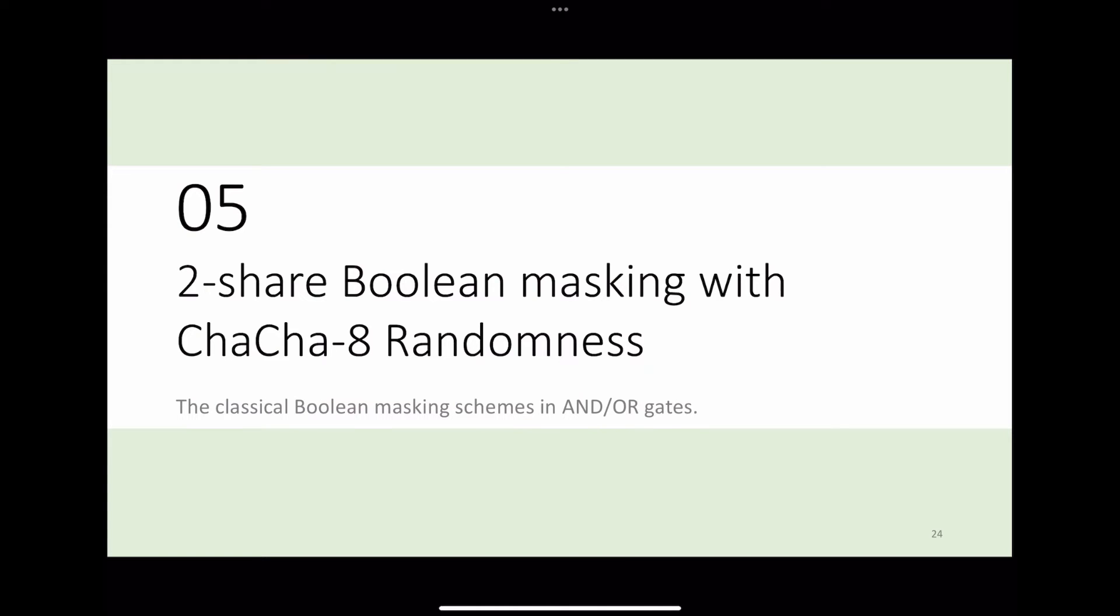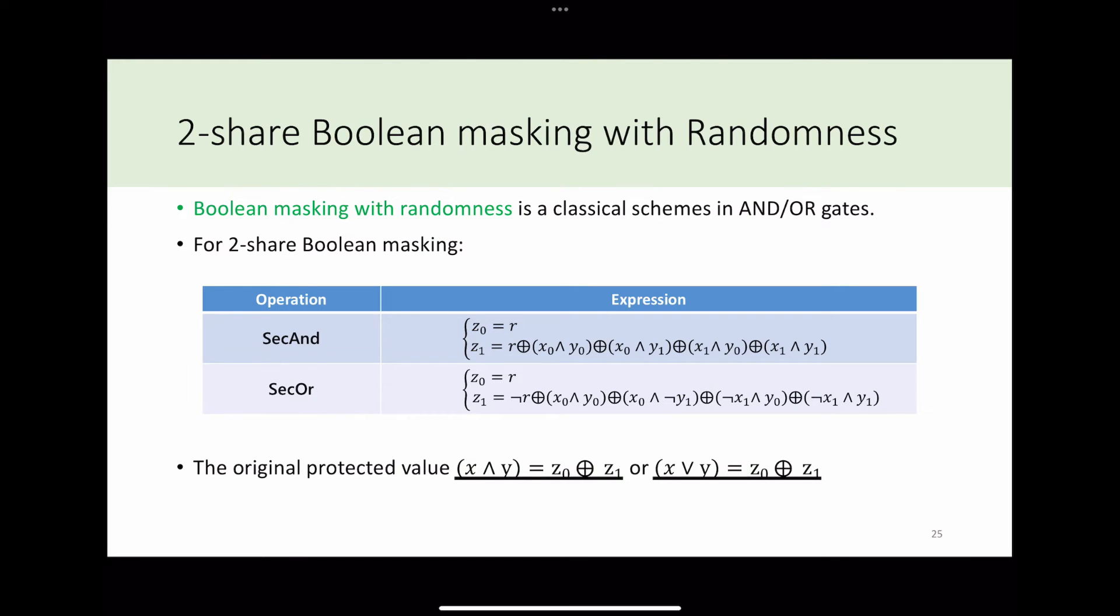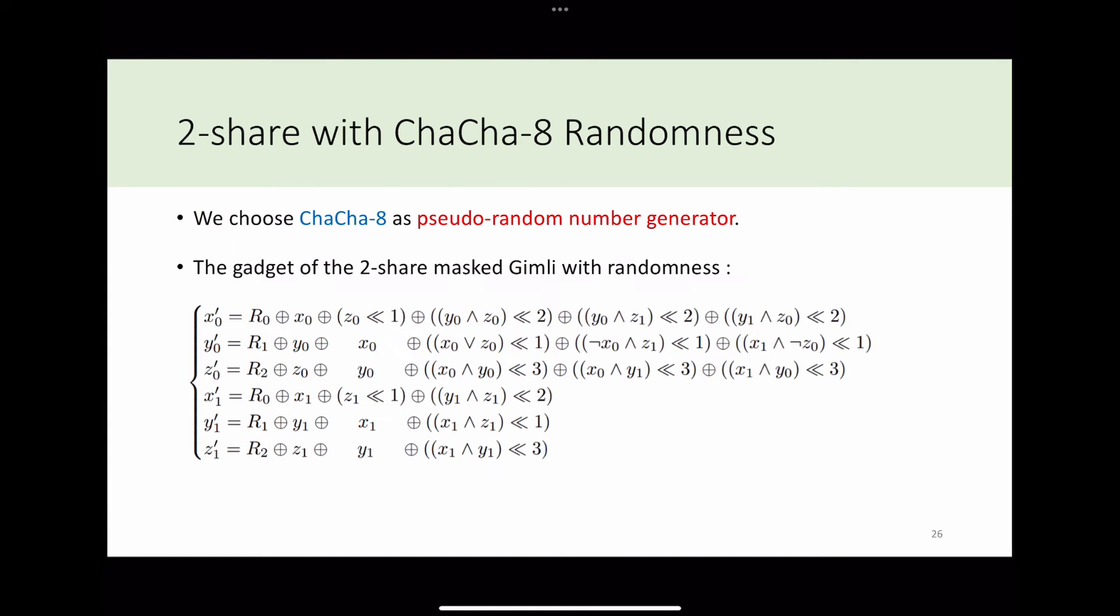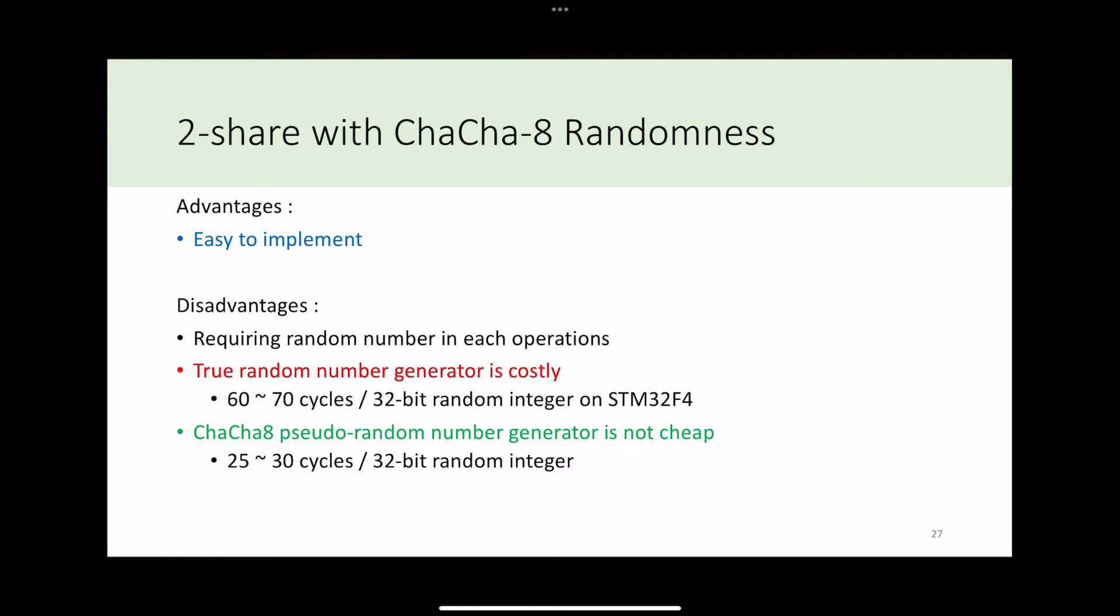Now, we implement a masked Gimli with a classical Boolean masking scheme. Boolean masking with randomness is a classical scheme in AND/OR operations. For two-share Boolean masking, put a fresh random number R into share zero, and use the same random number to protect the secret value by XOR operation. There is a gadget of the two-share masked Gimli with randomness. Since we need a fresh random number in every AND/OR operation, we choose ChaCha8 as pseudo-random number generator.